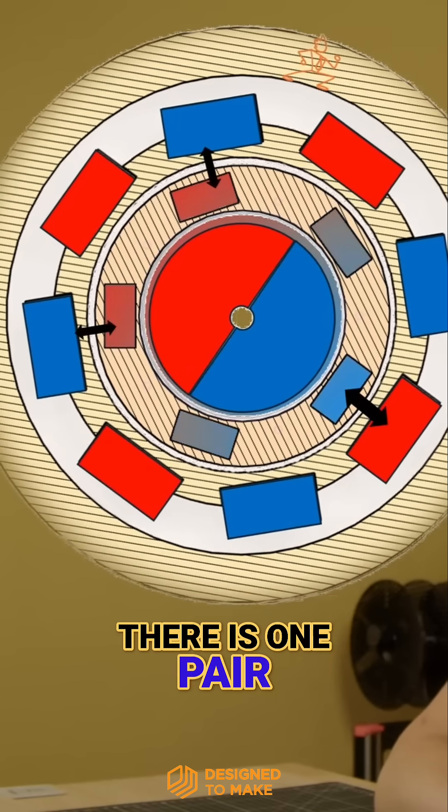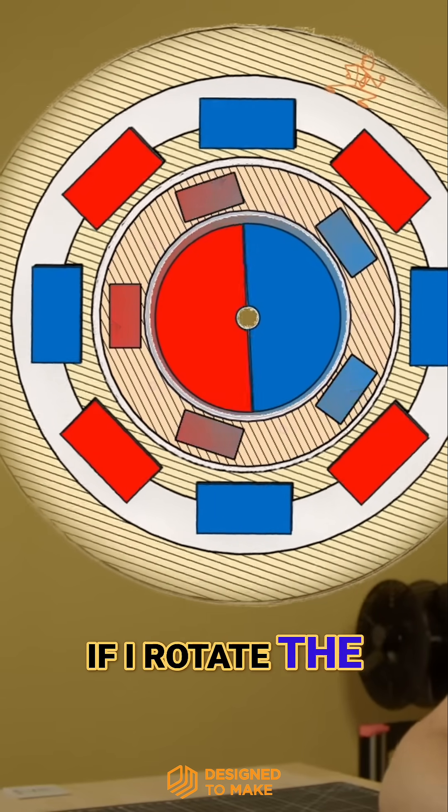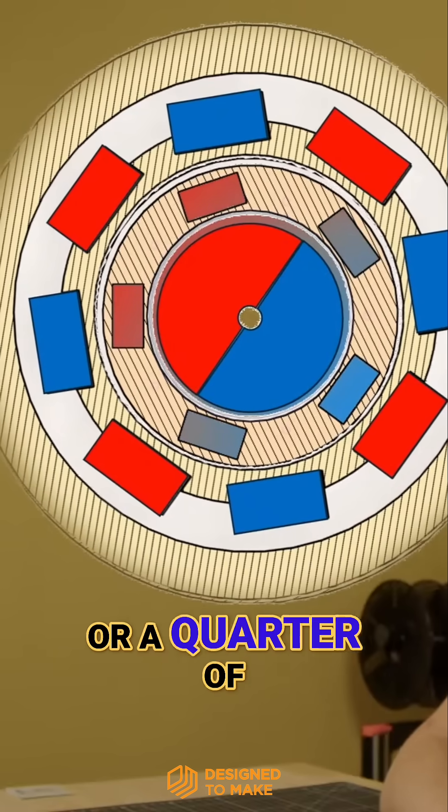Once again, there is one pair completely aligned north to south and two fairly well aligned. You can see that if I rotate the inner magnetic rotor one turn, it only rotates the outer ring 90 degrees, or a quarter of a turn.